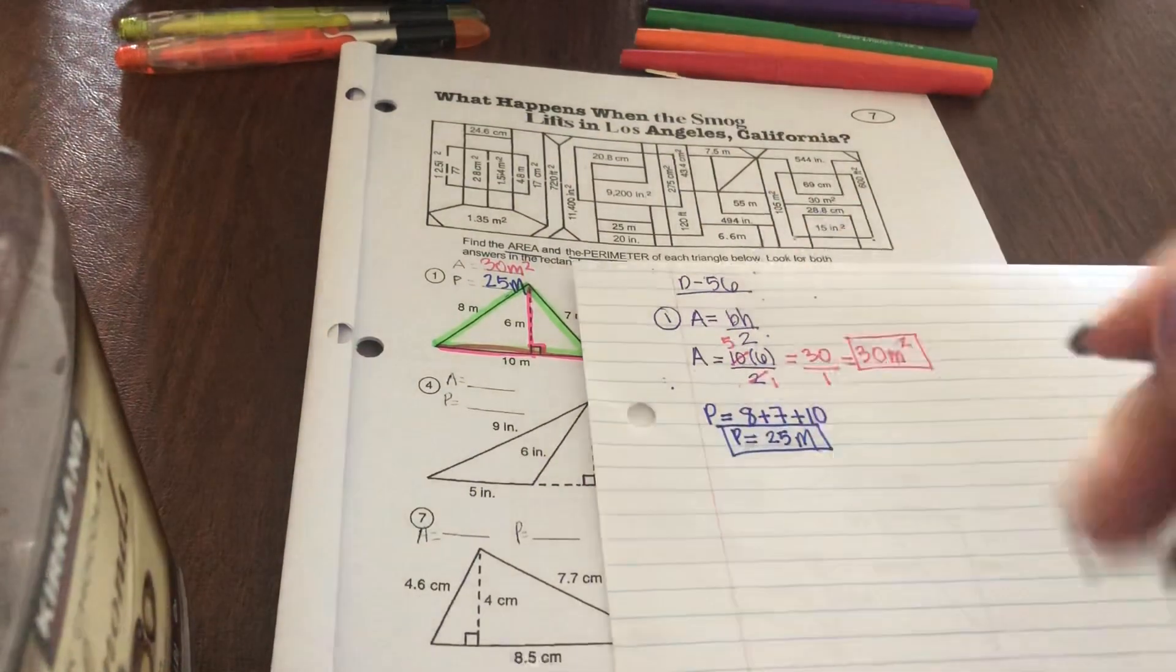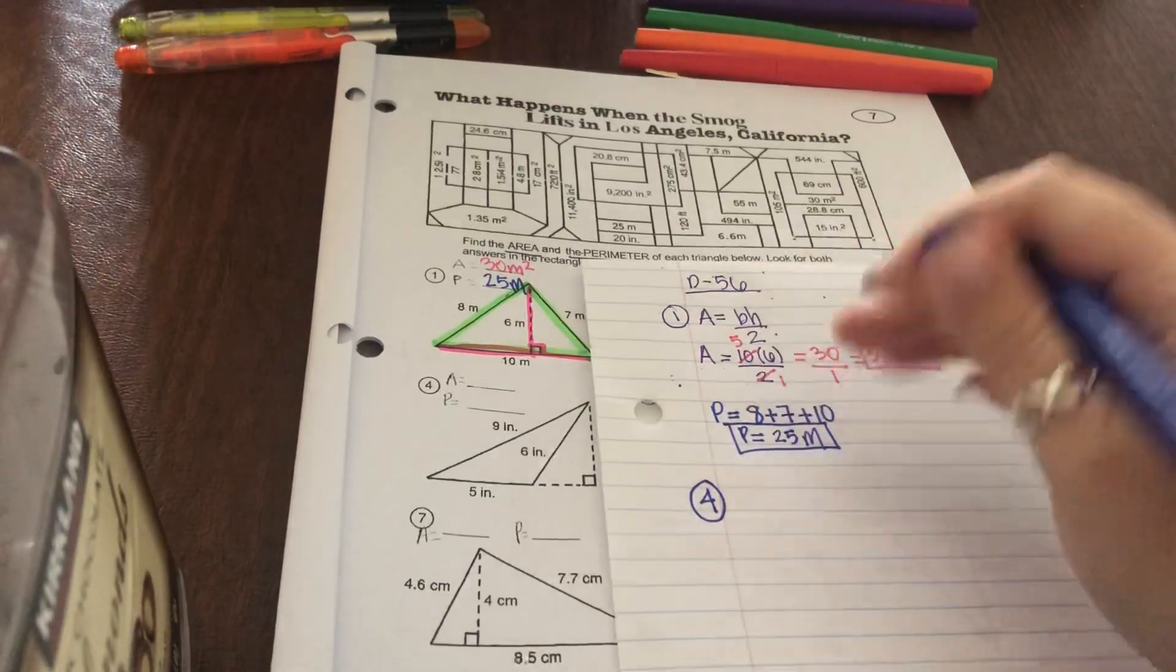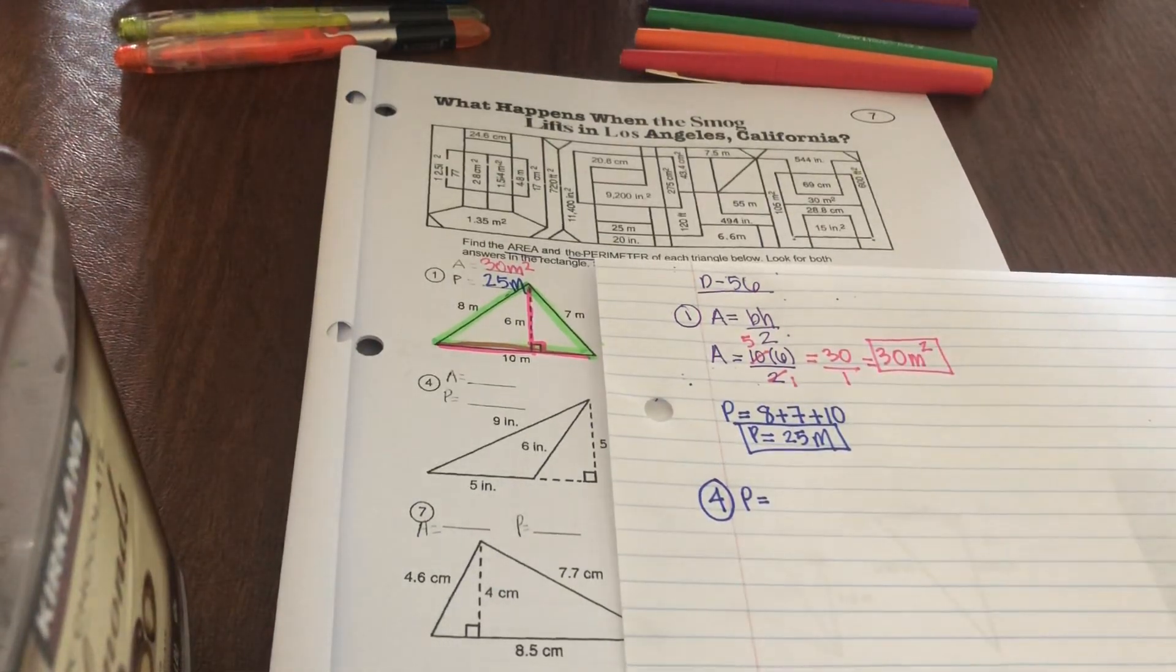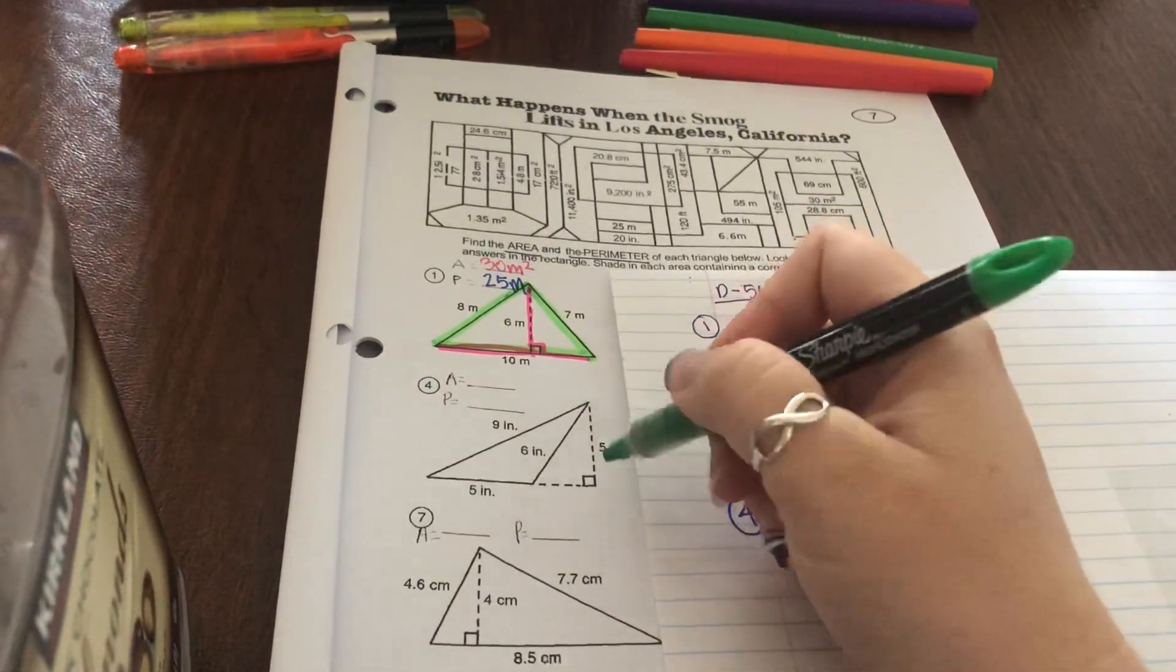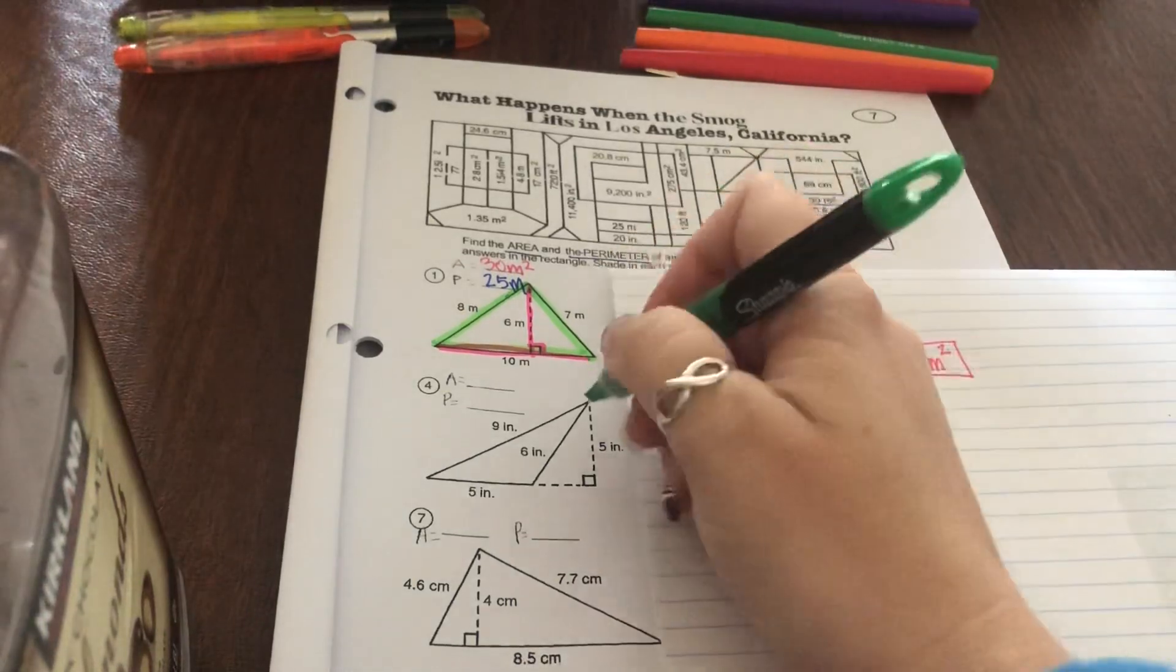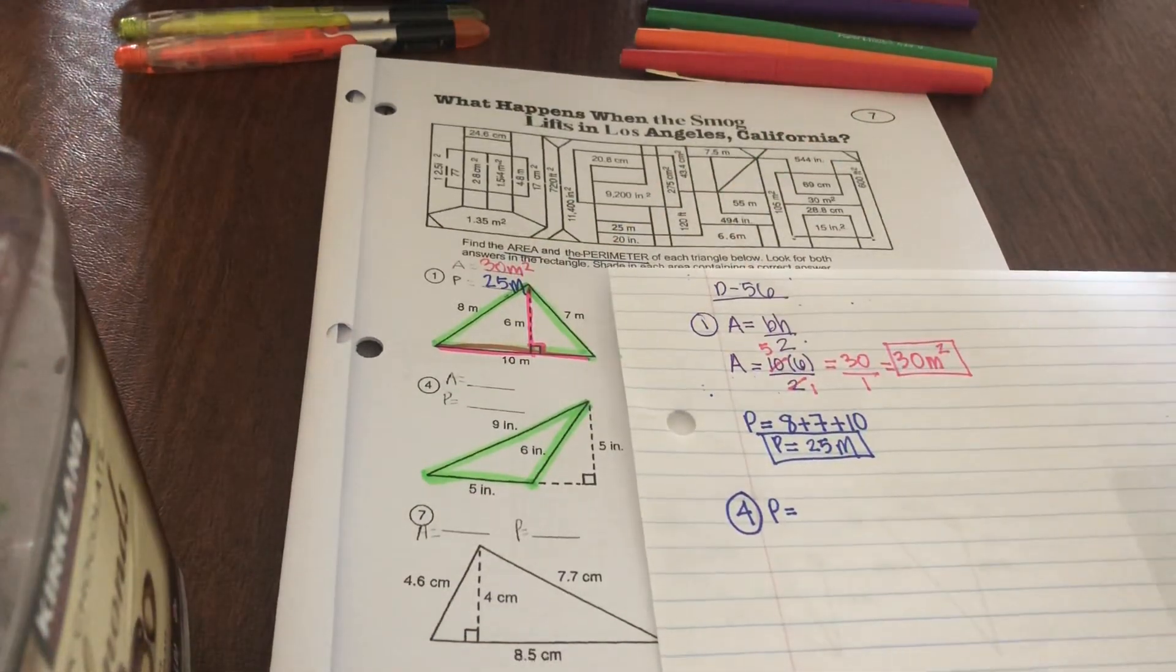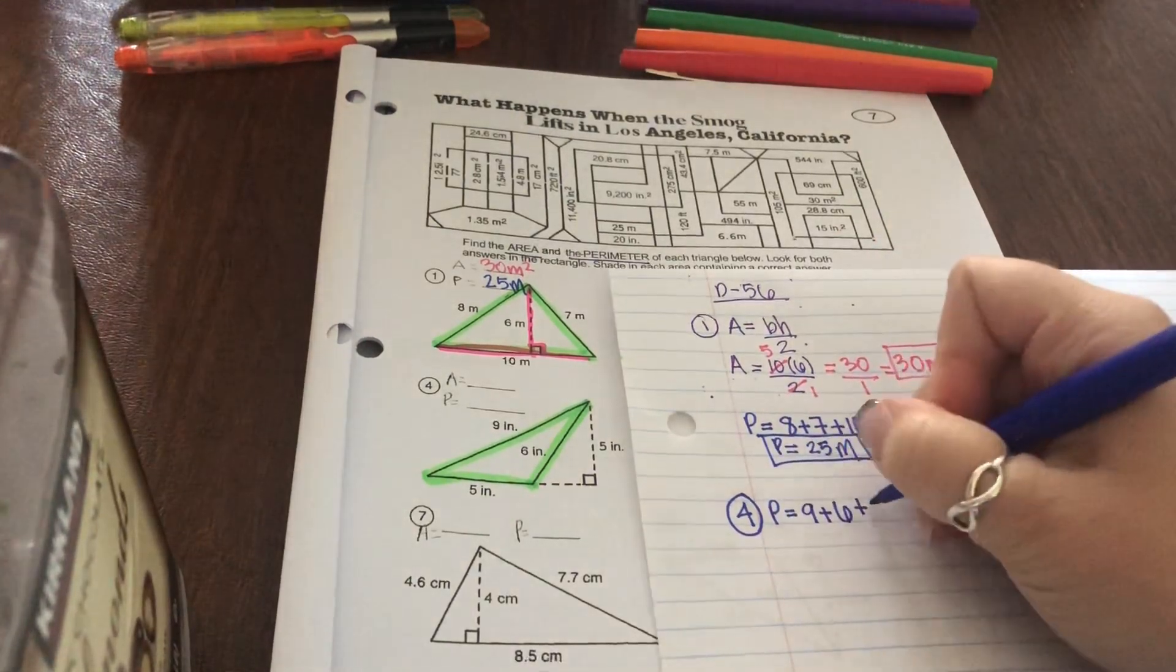Okay the only other example I'm going to do with you guys is number 4 and I'm just going to get you started. For the perimeter, let's do it first this time, it's just the outside edges. Is this 5 part of the outside edge? No it's not because it's a dashed line. A dashed line is not actually part of the figure. So the outside of the figure for number 4 is just those three sides. So the outside sides are 9, 6, and 5.